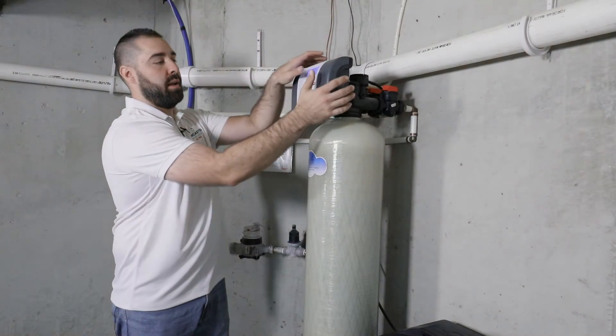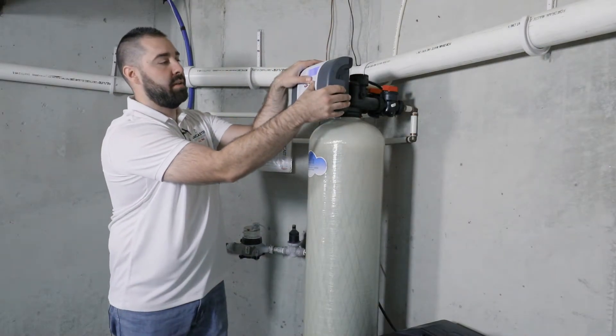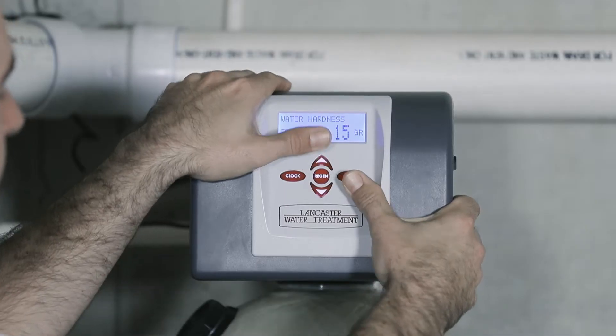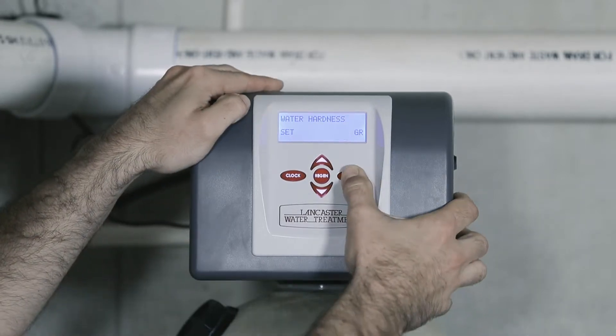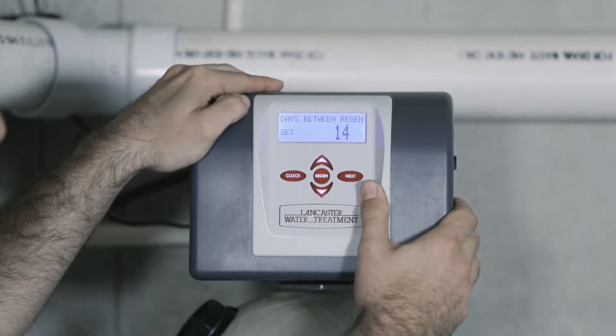To do that, we will press the next and up buttons together and hold. The screen will change to water hardness. Then press the next button to go to the days between.